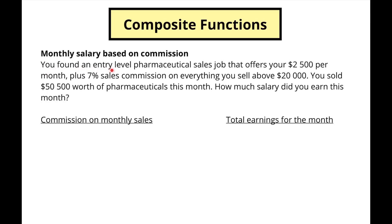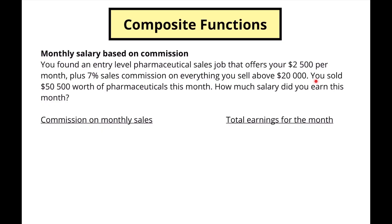Let's say that you found an entry-level pharmaceutical sales job that offers you two thousand five hundred dollars per month plus seven percent sales commission on everything you sell above twenty thousand dollars. A commission is a percentage of the amount that you sell — sometimes you get a base salary every month no matter how much you sell, and then if you sell a lot you get an extra bonus on top. That's what a commission is.